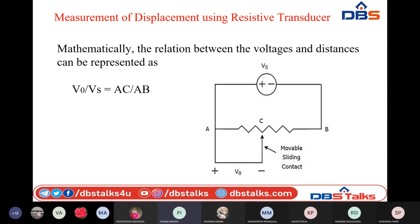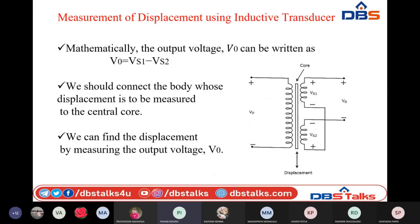So to find the displacement using a resistive transducer, we first measure the length of the displacement AC, then measure the total length AB, and multiply by the source voltage Vs. The output voltage V₀ = (AC/AB) × Vs gives the equivalent voltage for the displacement created by the body connected to the movable sliding contact.